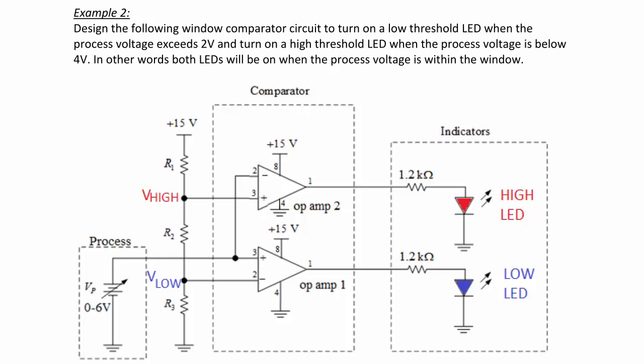Let's try one more example. Design a window comparator circuit to turn on a low-threshold LED when the process voltage exceeds 2 volts, and turn on a high-threshold LED when the process voltage is below 4 volts. In other words, both LEDs would be on when the process voltage is within the window between 2 and 4 volts.